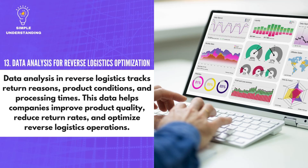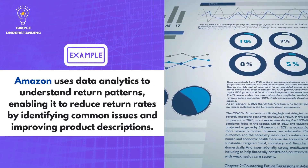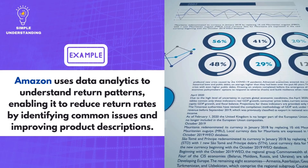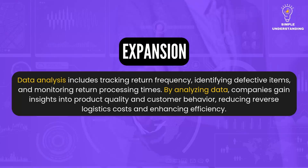13. Data Analysis for Reverse Logistics Optimization. Data analysis in reverse logistics tracks return reasons, product conditions, and processing times. This data helps companies improve product quality, reduce return rates, and optimize reverse logistics operations. Amazon uses data analytics to understand return patterns, enabling it to reduce return rates by identifying common issues and improving product descriptions. Data analysis includes tracking return frequency, identifying defective items, and monitoring return processing times, reducing costs and enhancing efficiency.